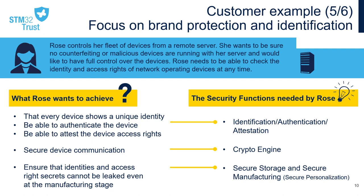Fifth example: Rose controls her fleet of devices from a remote server and she wants to be sure no counterfeiting or malicious devices are running with her server, and would like to have full control over her devices. To achieve this, Rose needs to check the genuineness of her brand devices, so she needs to be able to authenticate her devices with a unique identity which has been previously and securely personalized during manufacturing. She also needs to secure the communication between her devices and the remote server in order to protect the data exchange. And finally, she needs to ensure the unique identity and access rights cannot be changed with secure storage and secure personalization of these secrets.